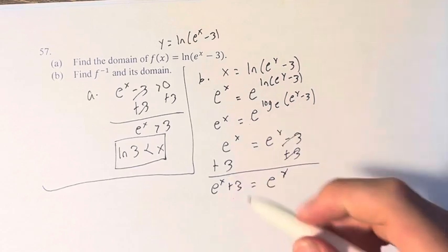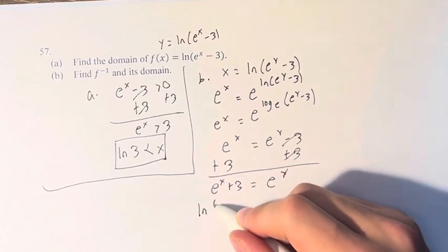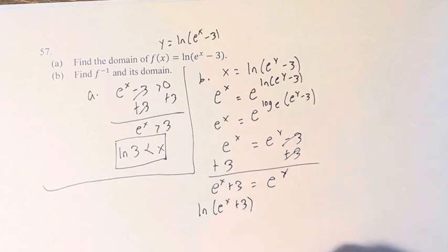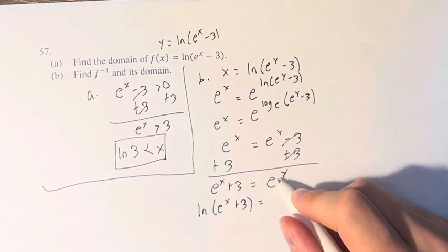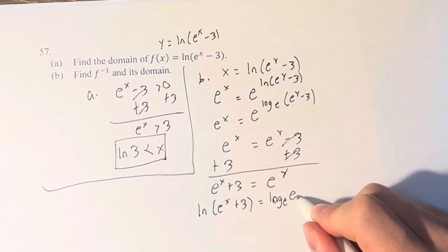And we can just take the natural log of both sides. To get the natural log of e^x plus 3 is equal to the natural log, which is log base e, of e^y.